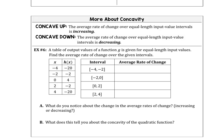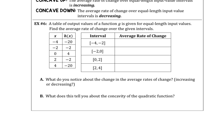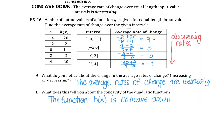In example 6, a table of output values of a function g is given for equal-length input values, and we want to find the average rate of change over the given intervals. Turn off the video, calculate those average rates of change, and come back to check your work. If you calculated everything correctly, you got 9, 3, negative 3, and negative 9. Those are decreasing rates, so the function h(x) is a quadratic function and is concave down. This is the end of Lesson 3, Part 1.